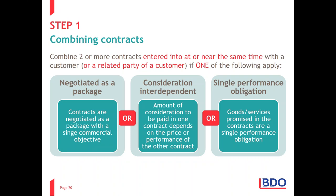An example of a single performance obligation split across contracts: if someone wants you to build a home and instead of one contract they split it into ten — build a bedroom, build a living room, build a kitchen — it's quite clear that it's one single performance obligation: build me a home. The fact that it's legally split into multiple contracts is irrelevant for IFRS 15 purposes. There could be other reasons for separate legal contracts, but for accounting purposes we look through that.